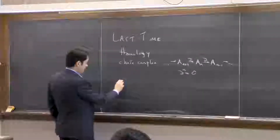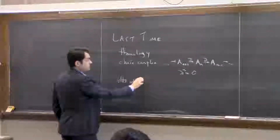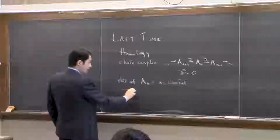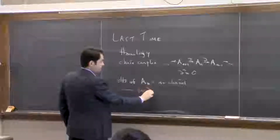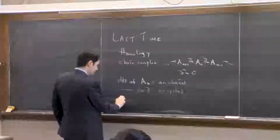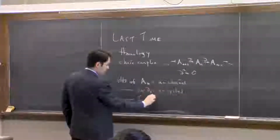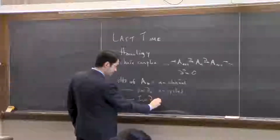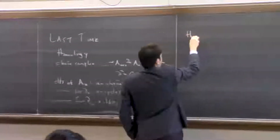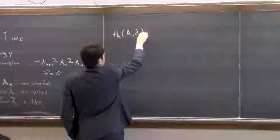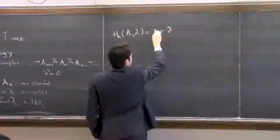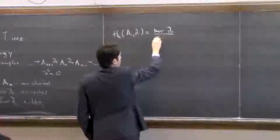The nomenclature is that elements of A_n are the n-chains. Elements of the kernel of the boundary on A_n are the n-cycles. Elements of the image — from A_{n+1} — are the n-boundaries. And the n-th homology of the chain complex is by definition the cycles divided by the boundaries.